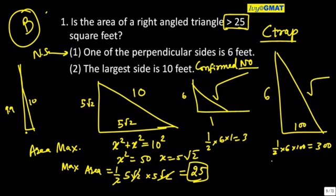But do I need to combine the two statements? The point is if one side is 6 the other is 10 what would have been the third side? 8, 6, 8, 10. You find out the area half 6 into 8 is 24, you would have said no it is not more than 25.